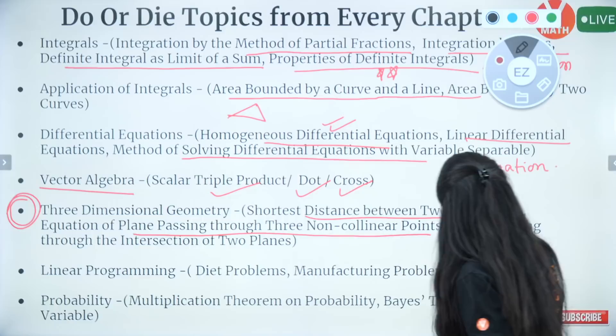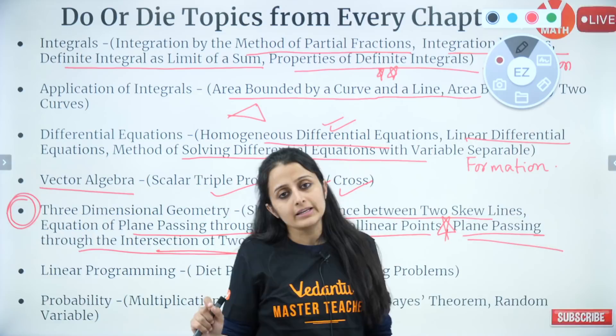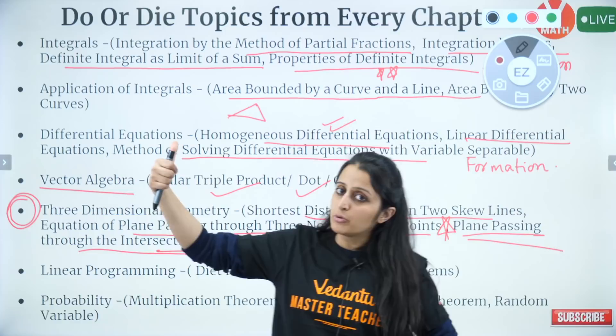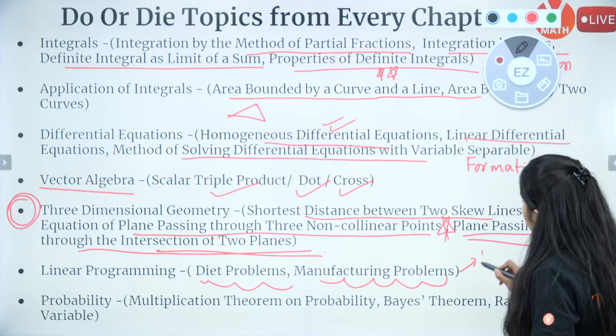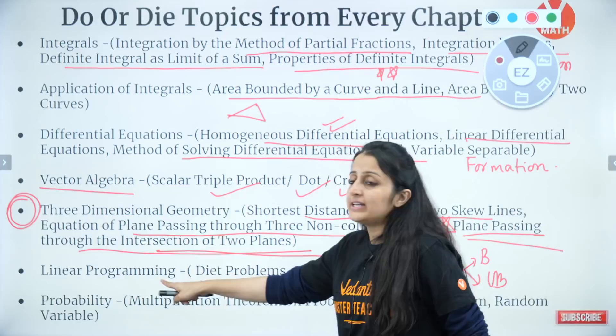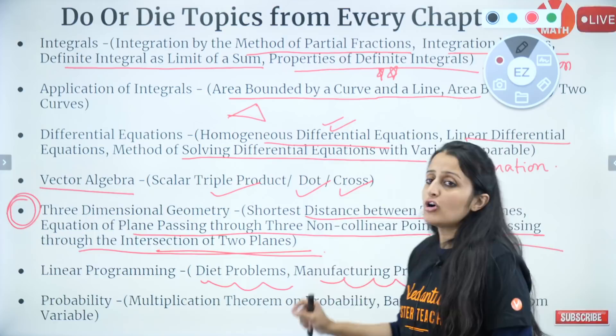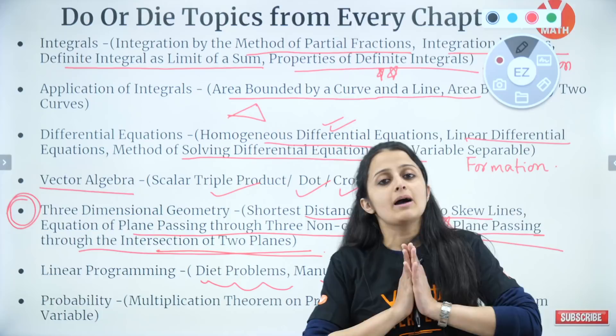The shortest distance between two skew lines is super important. Equation of a plane passing through three non-collinear points, and plane passing through intersection of two planes — these are used a lot. So if you are scared now, watch the vectors and 3D one-shot videos — they will help for both 12th boards and JEE Mains. For linear programming: diet problem, manufacturing problem — bounded or unbounded region can be tested. Transportation problem is never asked.